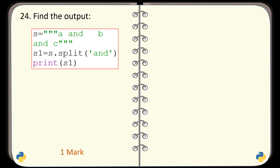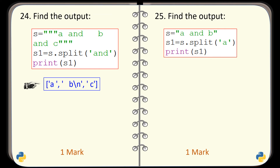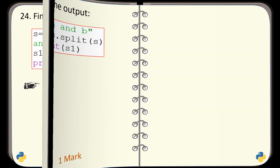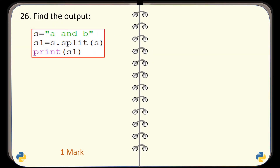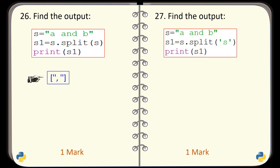Question number 24. Find the output generated by this code. And the correct output is this one. Question number 25. Find the output generated by this code. And the correct output is this one. Question number 27. Find the output generated by this code. And this is the correct output.